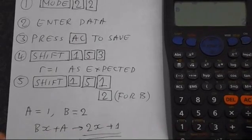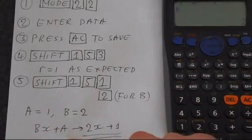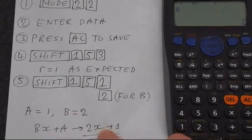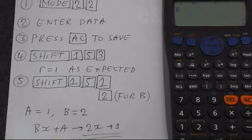See there, A equals 1, B equals 2. We've got bx plus a. Substitute A and B into this equation, and you get 2x plus 1 as expected. So that's an overview of all the statistics functions that you get on your Casio calculator. And thank you for watching.